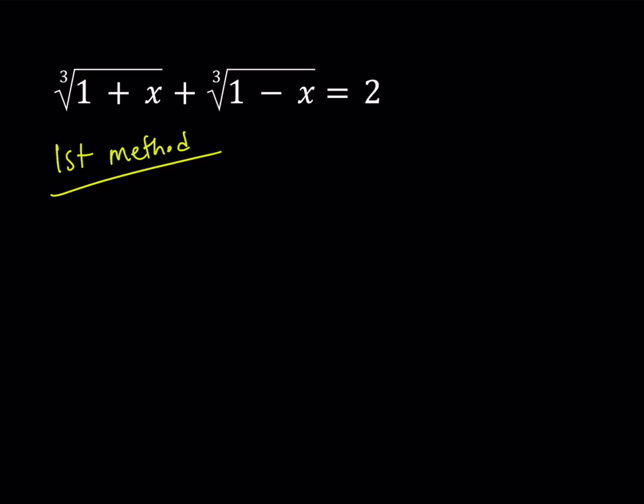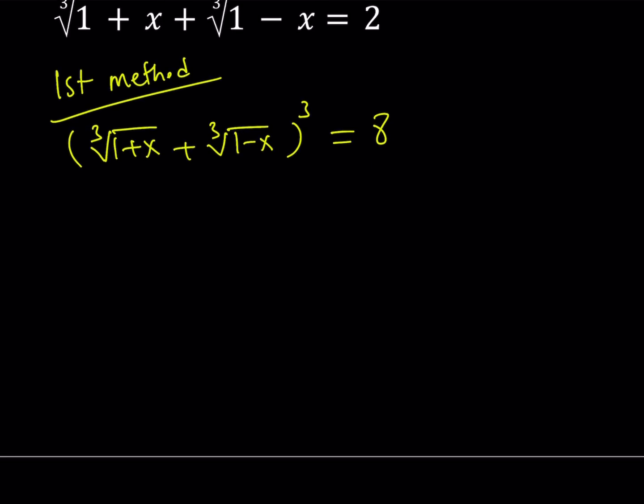Now, our first method involves cubing both sides. So, if you cube both sides, you're going to get 8. Now, in order to be able to cube this, I'm going to use the following formula.